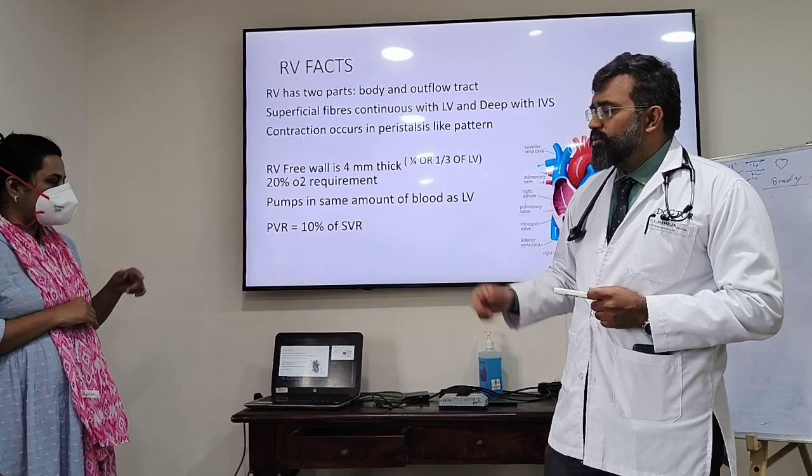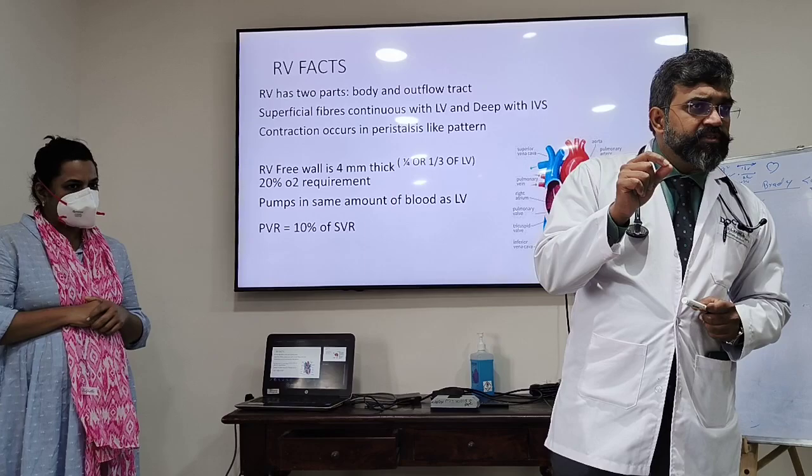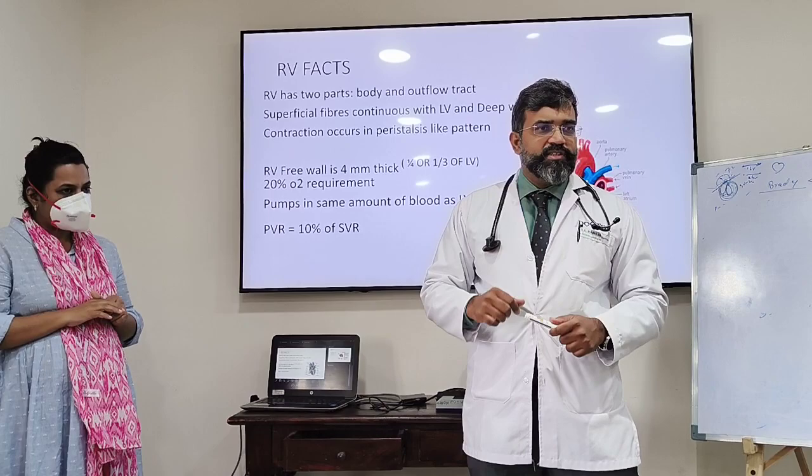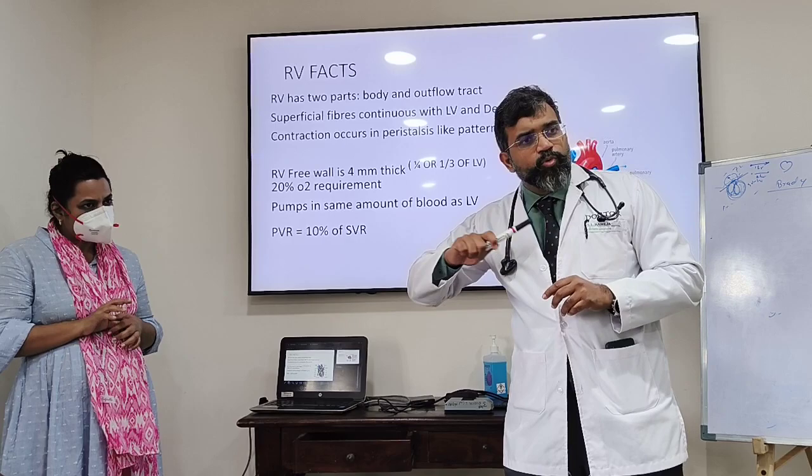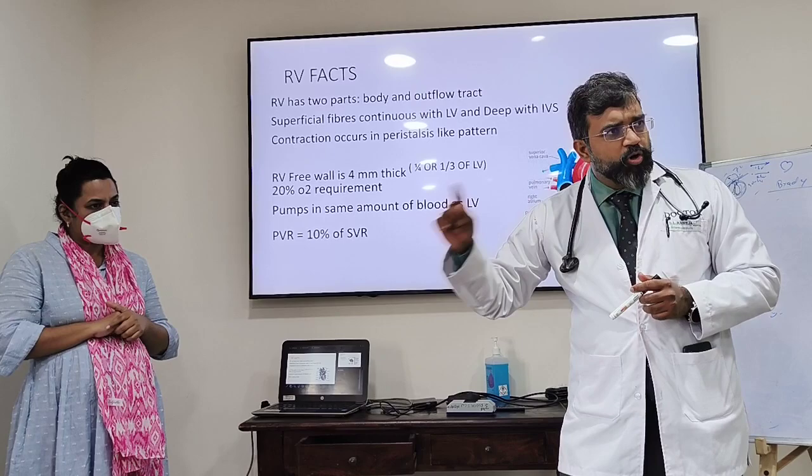In the left ventricle, perfusion generally occurs in diastole. Whereas the right ventricle is perfused in both systole and diastole. That becomes a problem — why? Because if the systolic pressure comes down along with the diastolic pressure, the RV gets more affected. Ischemia occurs more quickly and more problems arise.